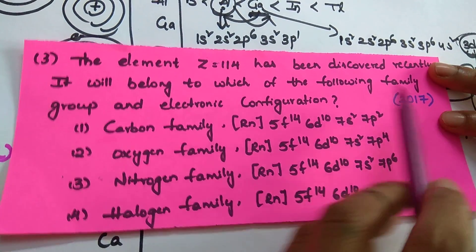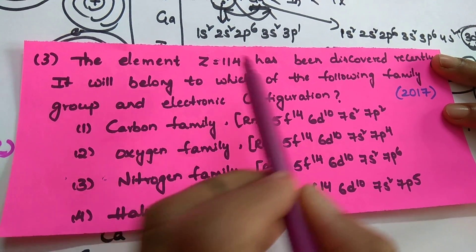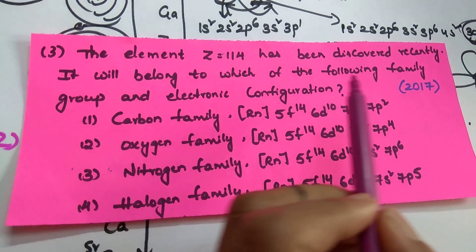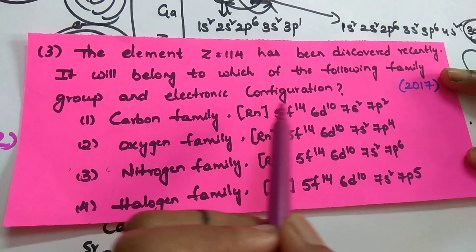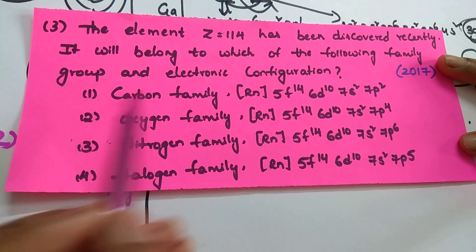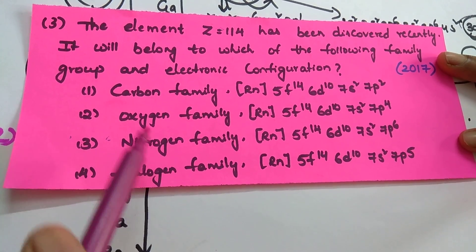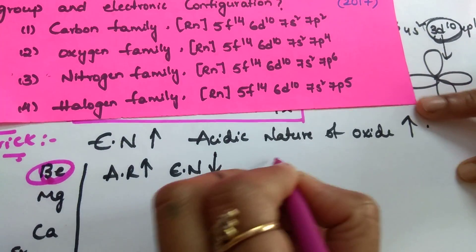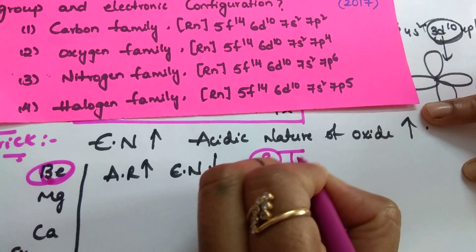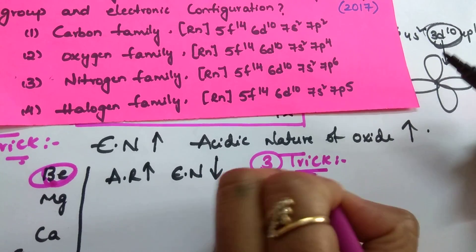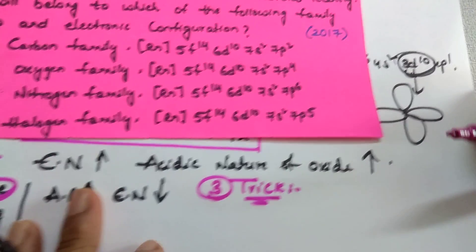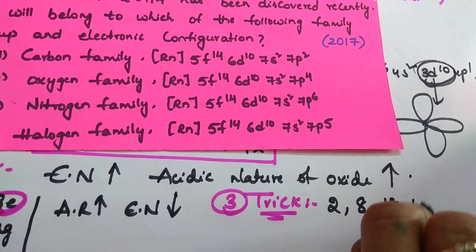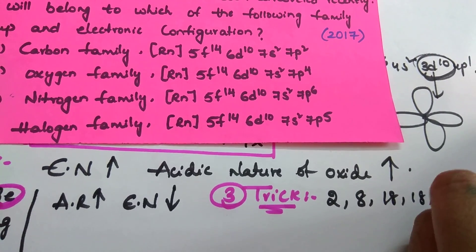See the 2017 question. The element with Z equal to 114 has been discovered recently. It will belong to which of the following family, group, and electronic configuration? To find the atomic number of the next element in a group, add these numbers: 2, 8, 18, 18, 32, 32 successively.